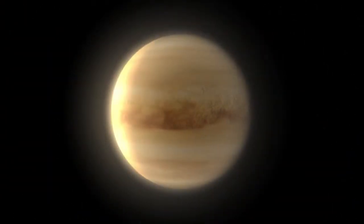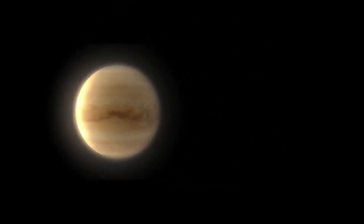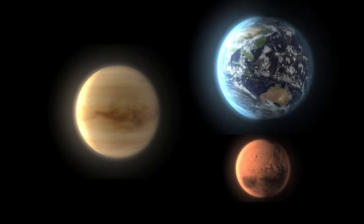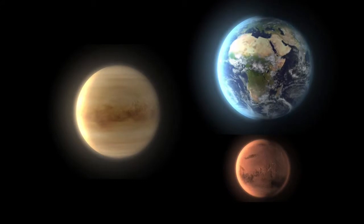As Venus orbits the Sun, it rotates in the opposite direction with respect to the other planets, and extremely slowly, just once in 243 Earth days. This is even longer than a Venusian year.